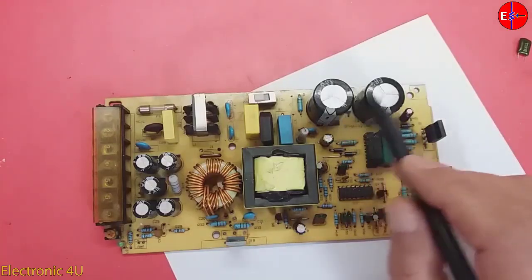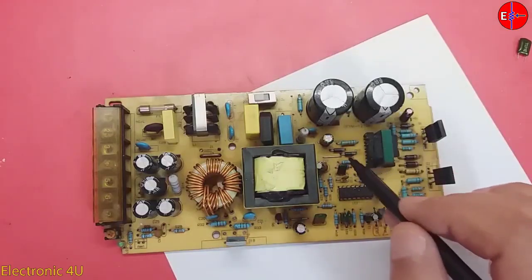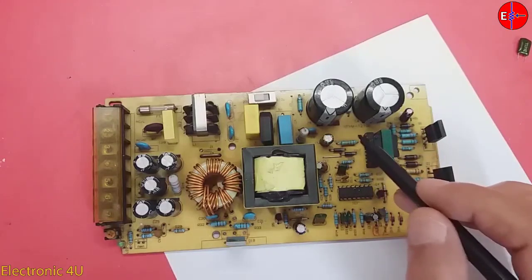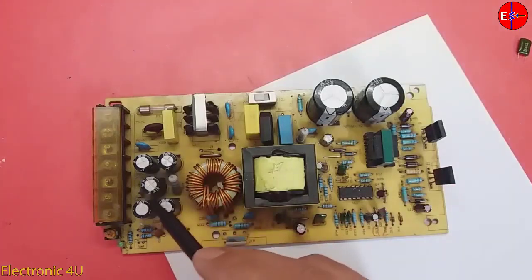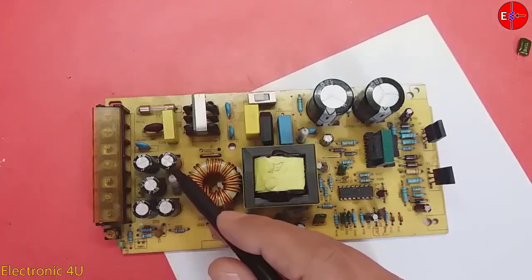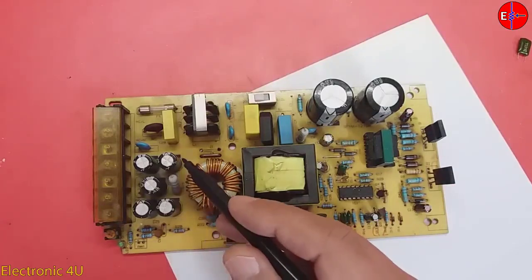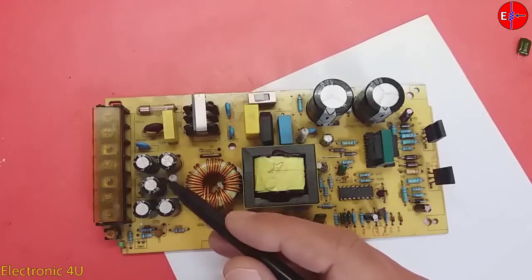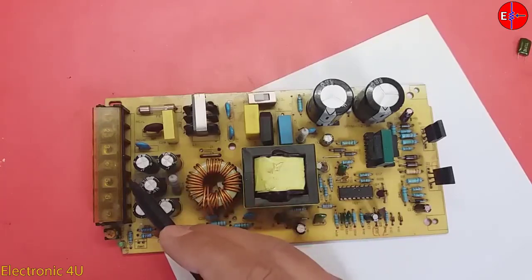So, the failure of this capacitor can reduce the power of the circuit. In the output section, there are several capacitors that are in parallel. The role of these capacitors is to reduce the voltage ripple. In fact, it produces a clean and smooth DC voltage at the output.